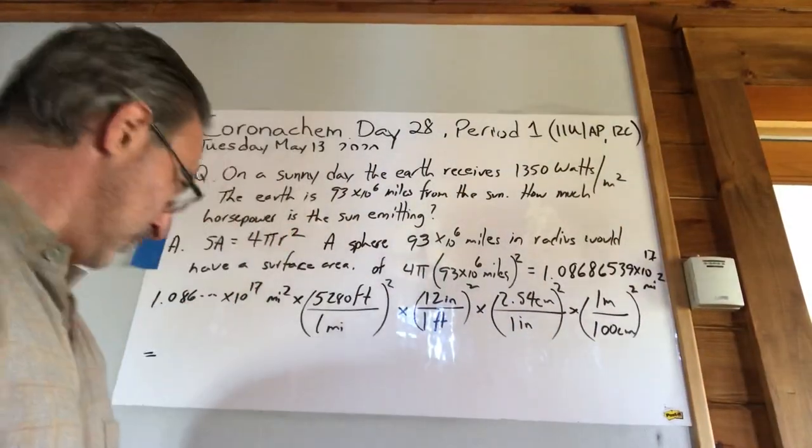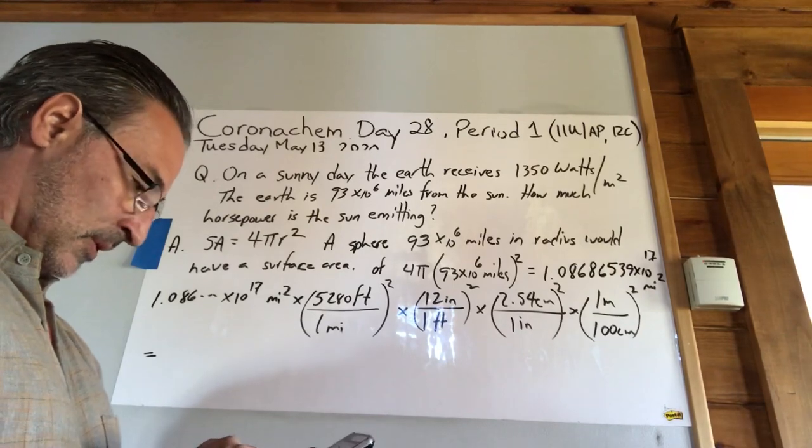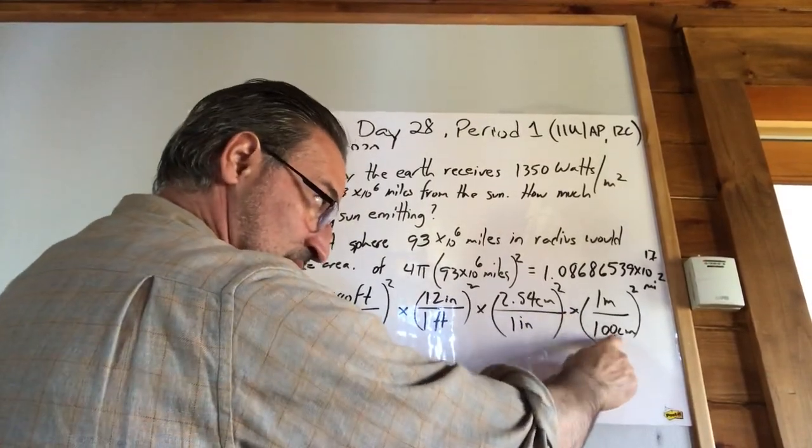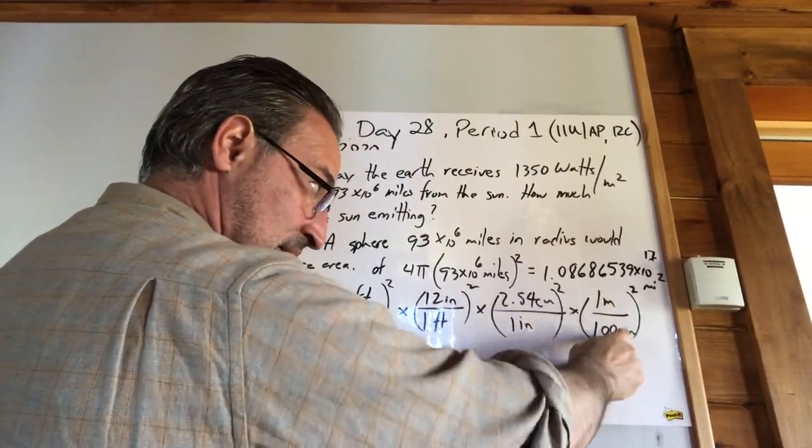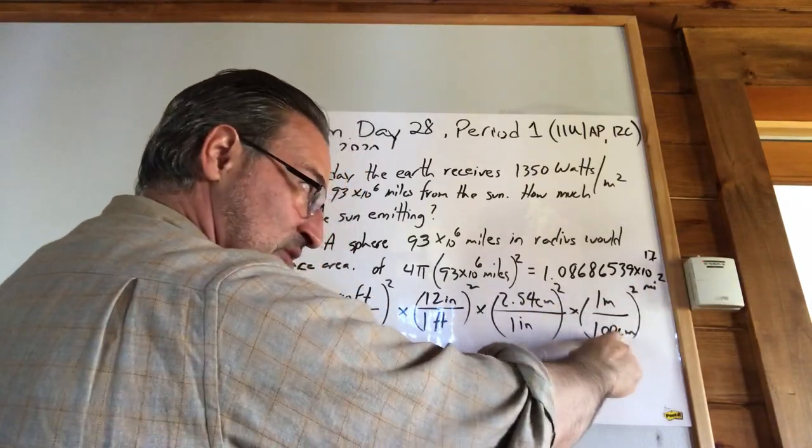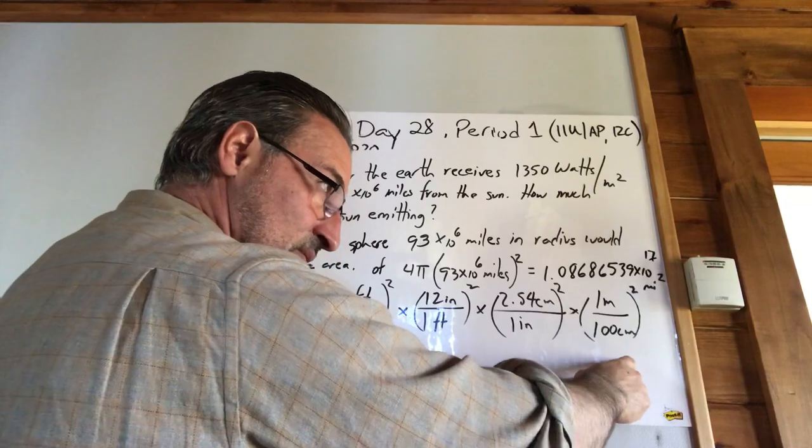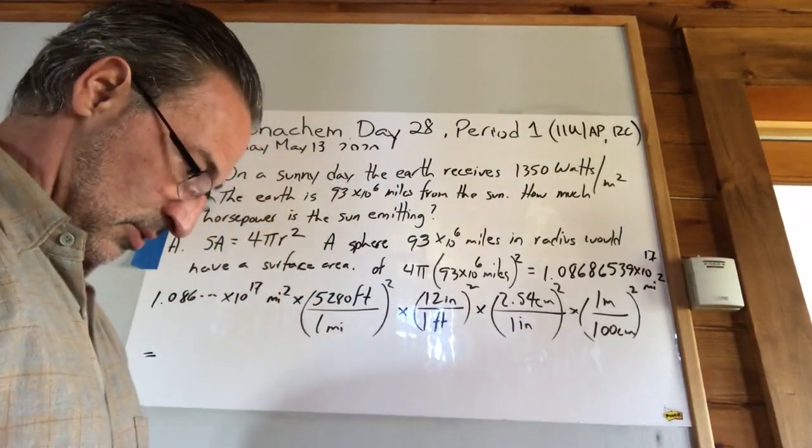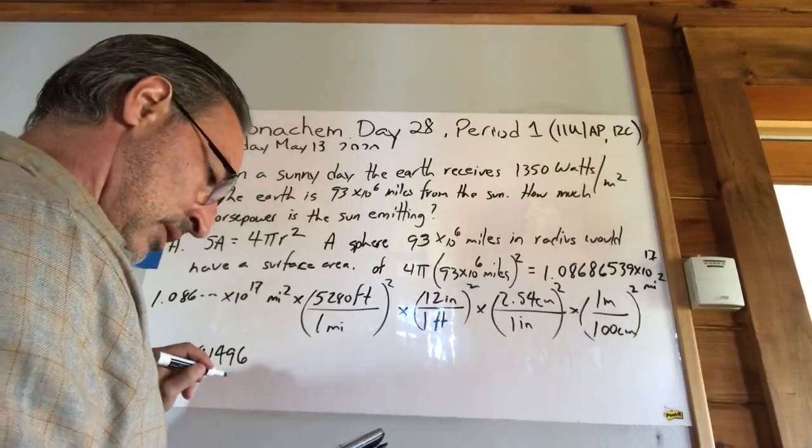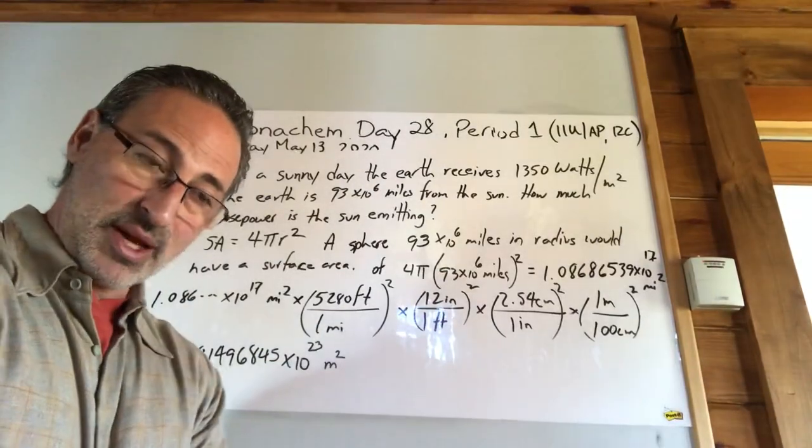So, times 5,280 squared times 12 squared times 2.54 squared divided by 100 squared. Remember, it says times here, but because the number that we're dealing with is in the denominator, the 1 is not going to do anything. 1 squared is still 1, but the number that we're dealing with that's going to have an effect is in the denominator, so that's a division. So when you're multiplying fractions, if you have a 1 in the numerator and some other number in the denominator, you divide. So, what you get is 2.81496845 times 10 to the 23 meters squared. That's the surface area of an imaginary sphere with a radius of 93 million miles.